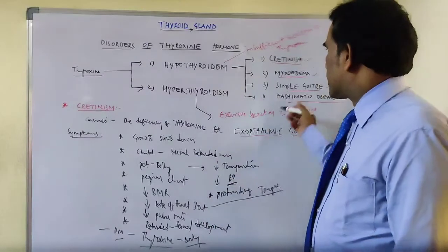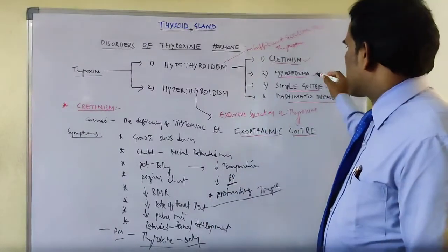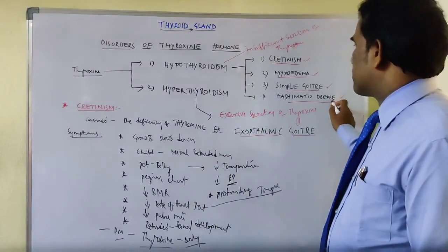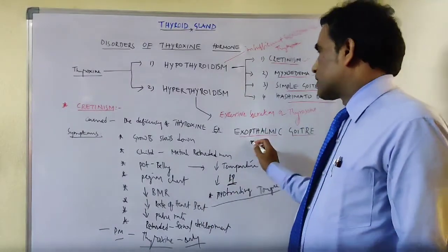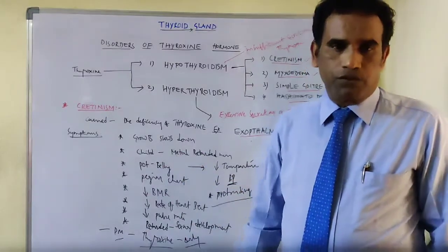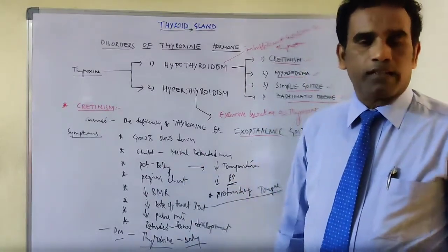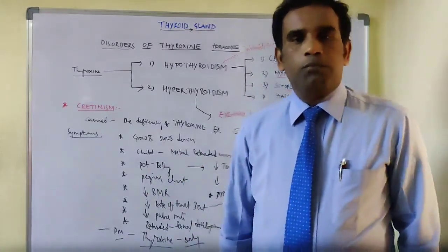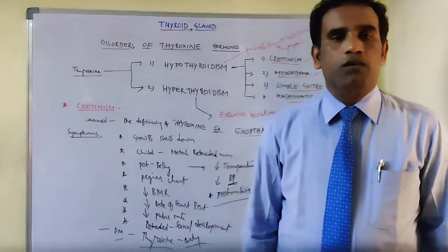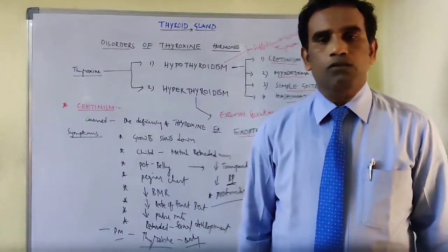The next disorders — myxedema, simple goiter, Hashimoto disease, and exophthalmic goiter — we will see in the next video. If you like this video, please share and subscribe to my channel. Thank you.